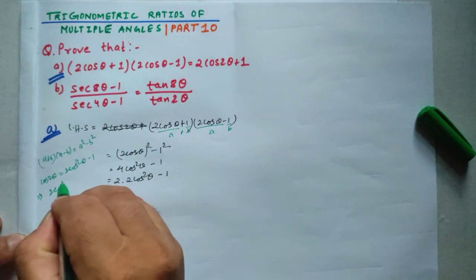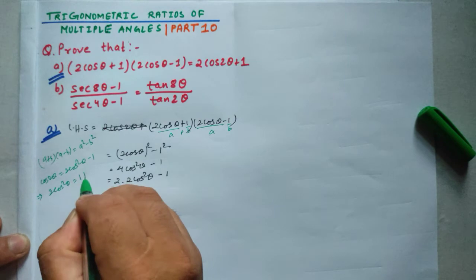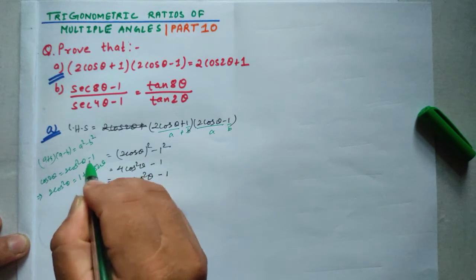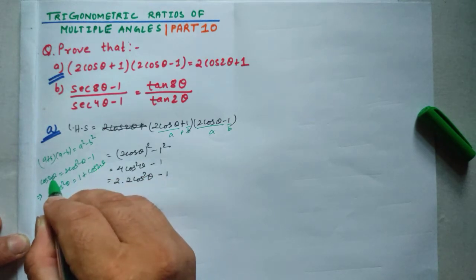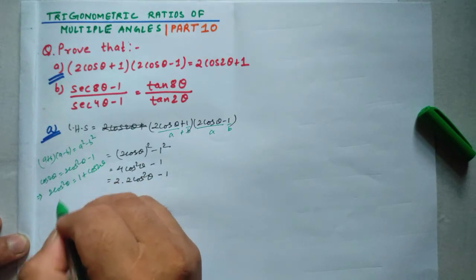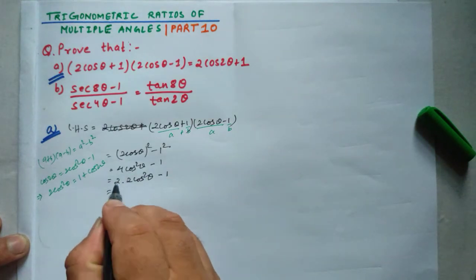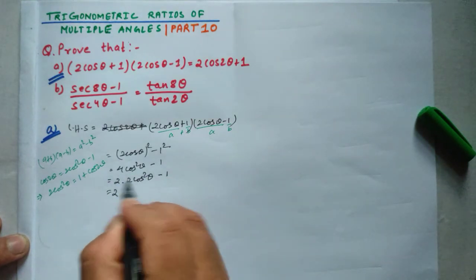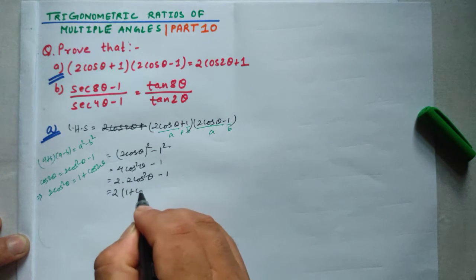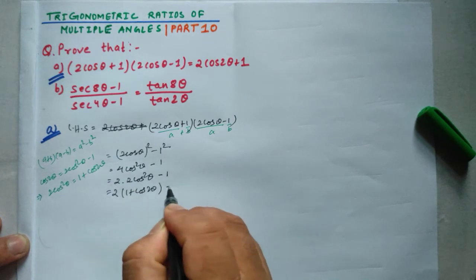From cos2θ = 2cos²θ - 1, we get 2cos²θ = 1 + cos2θ. So 4cos²θ - 1 = 2(1 + cos2θ) - 1 = 2cos2θ + 1.